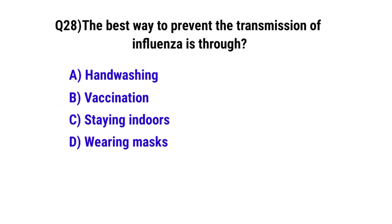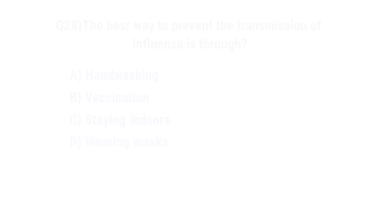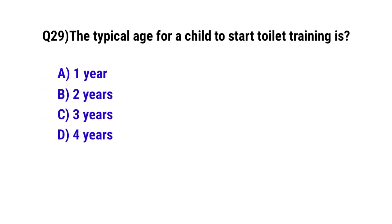Question 28: The best way to prevent the transmission of influenza is through — the correct option is B: Vaccination. Question 29: The typical age for a child to start toilet training is — the correct option is B: Two years.